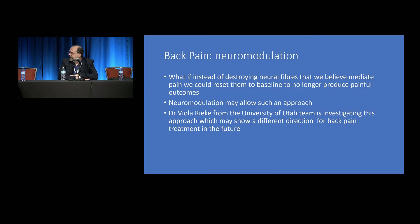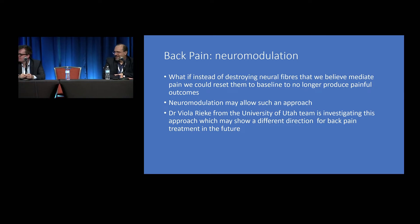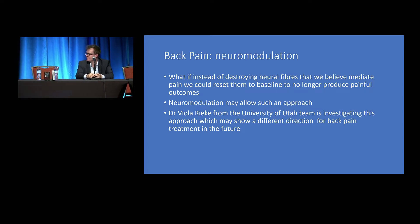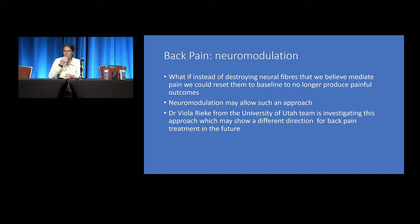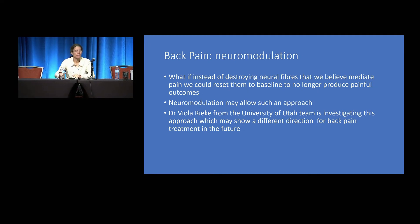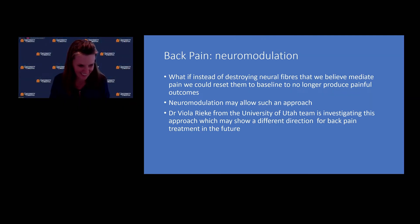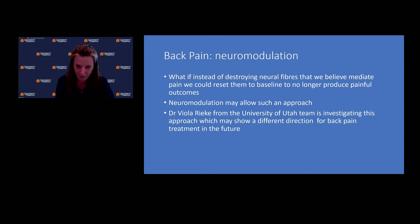We're now turning to Lynn Kohan from the University of Virginia, online, who will talk about her work in SI joints. Back pain is complicated and can come from multiple sources, but sacroiliac joint pain is very common and is another good target for focused ultrasound. The targets we're looking at are the innervation of the SI joint — the lateral branches and L5 dorsal ramus, specifically the sacral lateral branches.